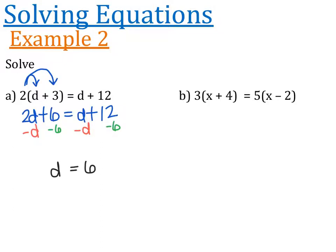For question b, there are two brackets, but we just go ahead and expand them. 3x plus 12 is equal to 5x minus 10. Now this one's interesting — up until now I've always been getting the letters on the left hand side, because the letter and number combination was always bigger on the left. For instance, 2d is bigger than just d. So I often want to try to get rid of the smallest number. Looking at 3x and 5x, I'm going to get rid of the 3x so I don't have to deal with negatives. That would be my suggestion, but you're welcome to do it another way.